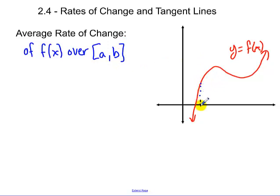So I have some x value that's a, another x value that's b. The average rate of change of that is essentially the slope of the line that goes through those two points. So it's the slope of what we call the secant line.